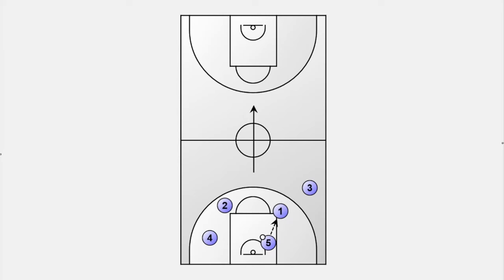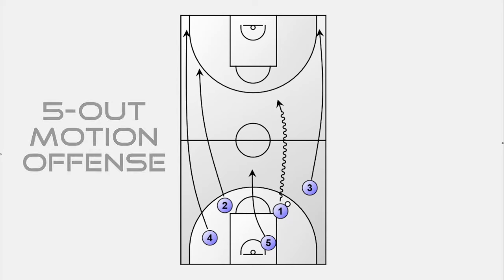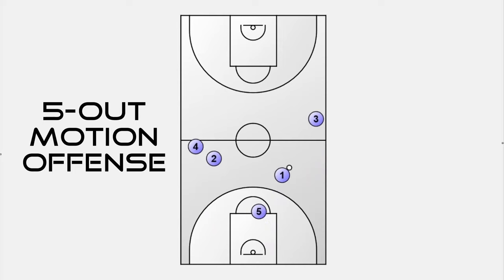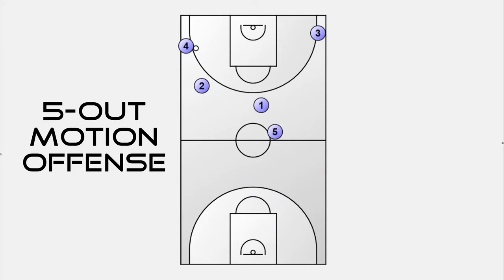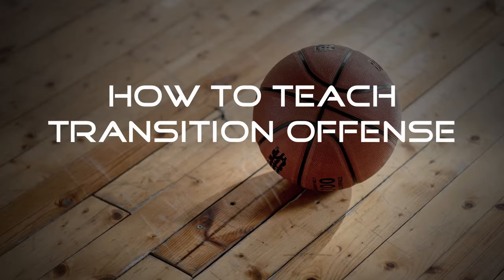In one of my last videos, I gave you a concept of how to run transition that fits perfectly in a 5-out motion half-court offense. You'll find a link in the description box down below. But how should you teach transition offense to your team?